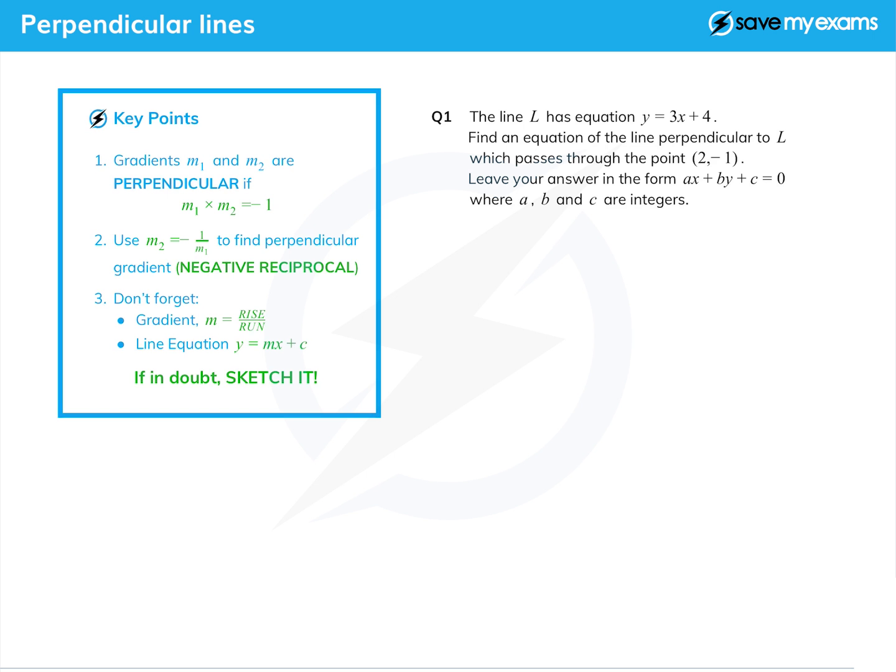We're given a line l which has equation y equals 3x plus 4. We note from that, if we look at y equals mx plus c, then the gradient is 3 and the y-intercept is 4. We're asked to find an equation of a line which is perpendicular to that line l and passes through (2, -1).